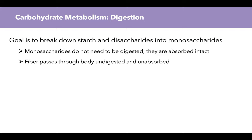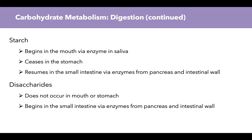Now let's move into carbohydrate metabolism, starting with digestion. The goal is to break down starch and disaccharides into monosaccharides. Monosaccharides themselves do not need to be broken down — they are absorbed intact. Fiber passes through the body undigested and unabsorbed. Starch is digested first in the mouth through an enzyme called salivary amylase, produced by our salivary glands. As we chew starches, our enzymes are already working to break down starch into shorter glucose strands.